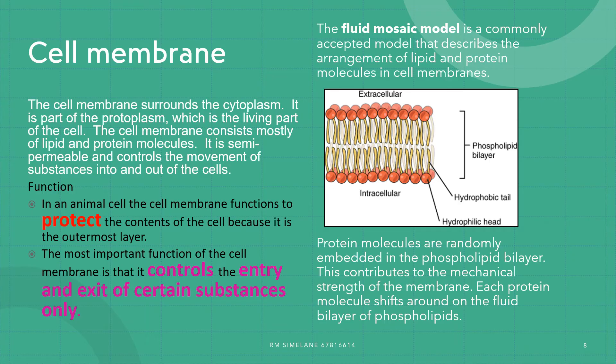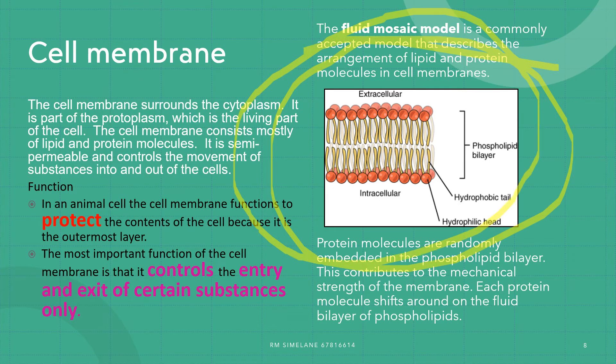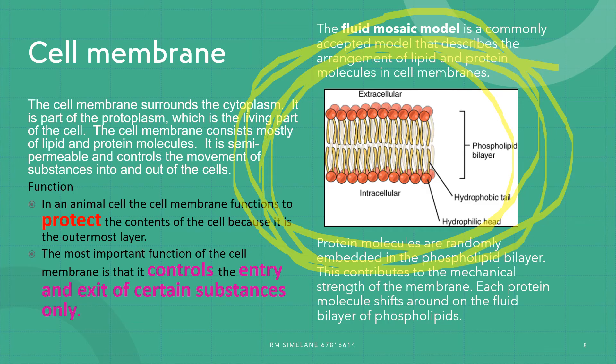The fluid mosaic model describes the arrangement of lipids and protein molecules in a membrane. The protein molecules are randomly embedded into the phospholipid bilayer, which contributes to the mechanical strength of the membrane. Each protein molecule shifts around the fluid bilayer of phospholipid. Here we can see the phospholipid layers and the intracellular and extracellular regions — this is what we call the fluid mosaic model.